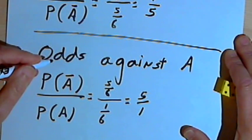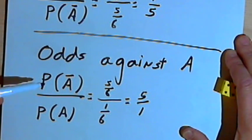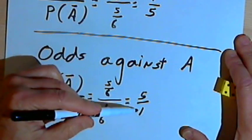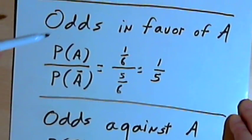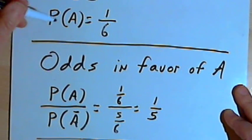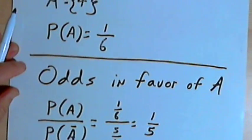So the odds against A are 5 over 1, or 5 to 1. Notice, by the way, that the odds can be a fraction which is greater than 1. The probability at most can only be 1. It'll be somewhere between 0 and 1.